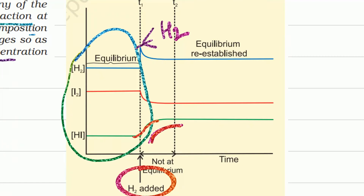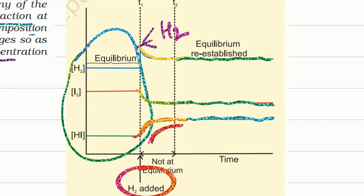Looking at the graph: after adding hydrogen, the product side (HI) concentration increases, and the reactant side — both hydrogen concentration and iodine concentration — decrease. Then the concentrations of HI, I₂, and H₂ become constant again at a new equilibrium. This means that when you disturb equilibrium by changing concentration, the disturbance is neutralized by the reaction proceeding in the forward or backward direction depending on what needs to be neutralized.